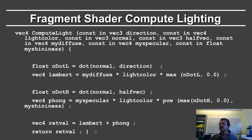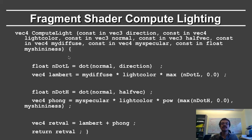Here is my program to compute the lighting. It takes in a large number of arguments: const vec3 direction — just as in standard C++, it's the direction — the light color, the normal, the halfway vector, the diffuse component, the specular component, and the shininess. Some version of this you will be using in homework 2, so do look at it carefully.